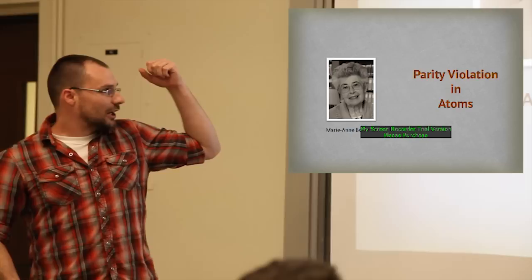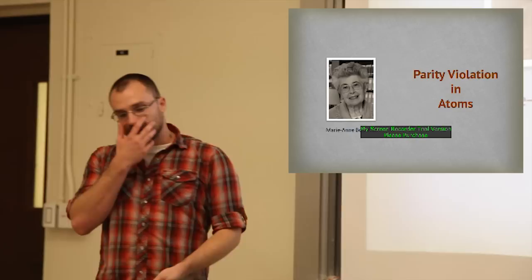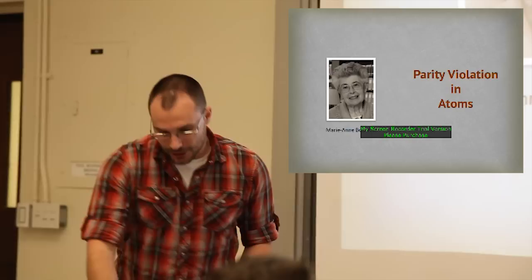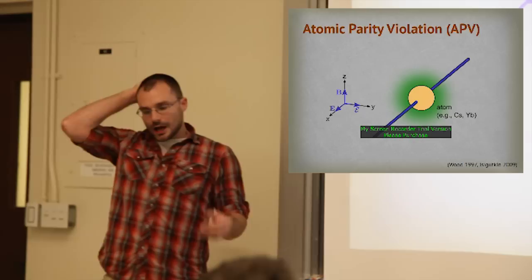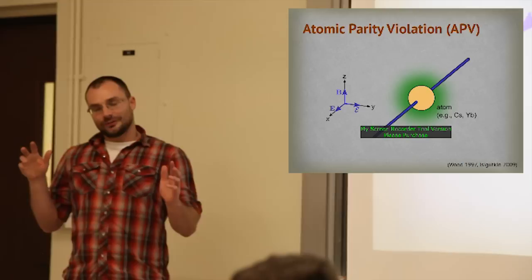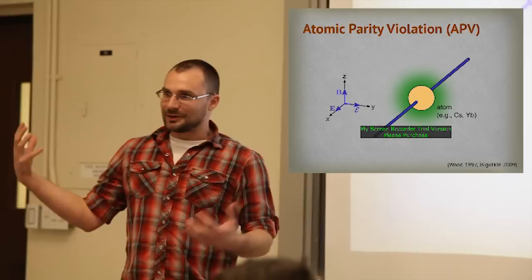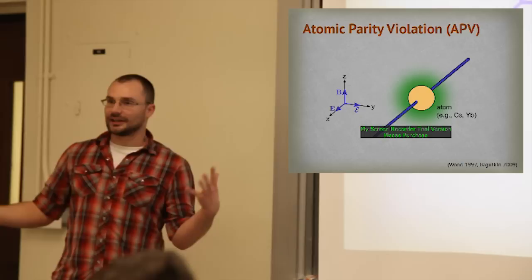Now I'd like to talk about what parity violation looks like in an atomic system. Here we have a picture of Marie Bouchiat, who is famous in the field of atomic parity violation for contributions to both experiment and theory. She and Zeldovich basically kicked this field into existence. We don't have two versions of the same experiment in my lab, and my lab is downstairs, not in outer space — so how do we compare a left-handed experiment to a right-handed one?